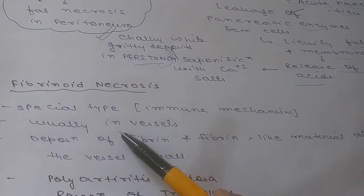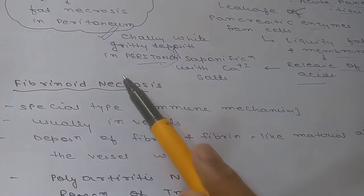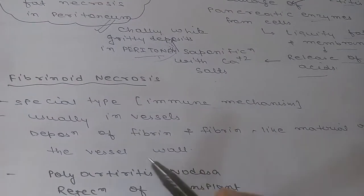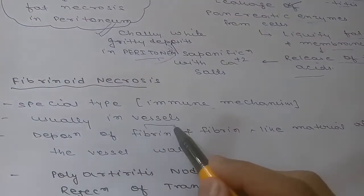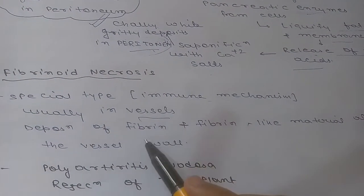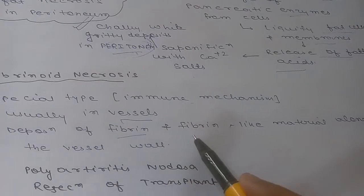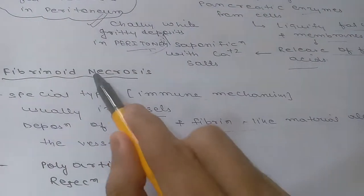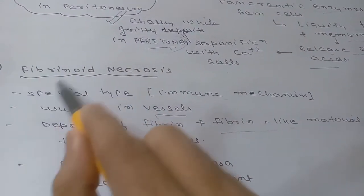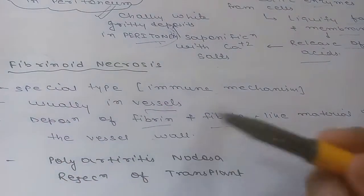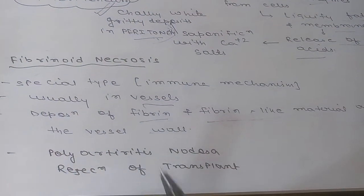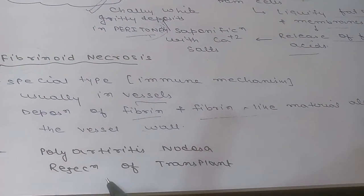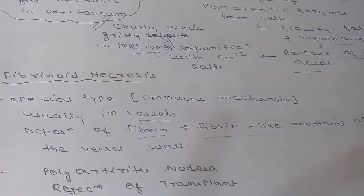The last type is fibrinoid necrosis, a special type related to the immune system. It generally occurs in vessels, with deposition of fibrin-like material along the vessel wall. This can be seen in polyarteritis nodosa or rejection of a transplant.